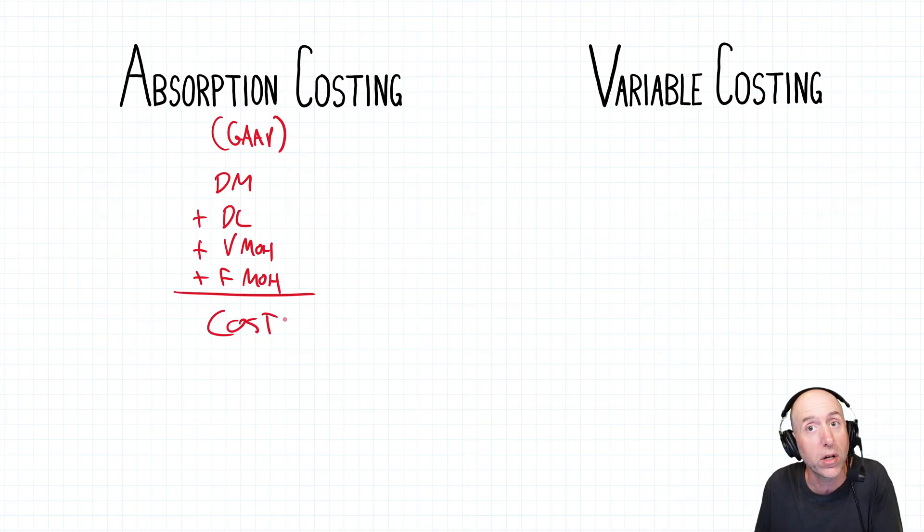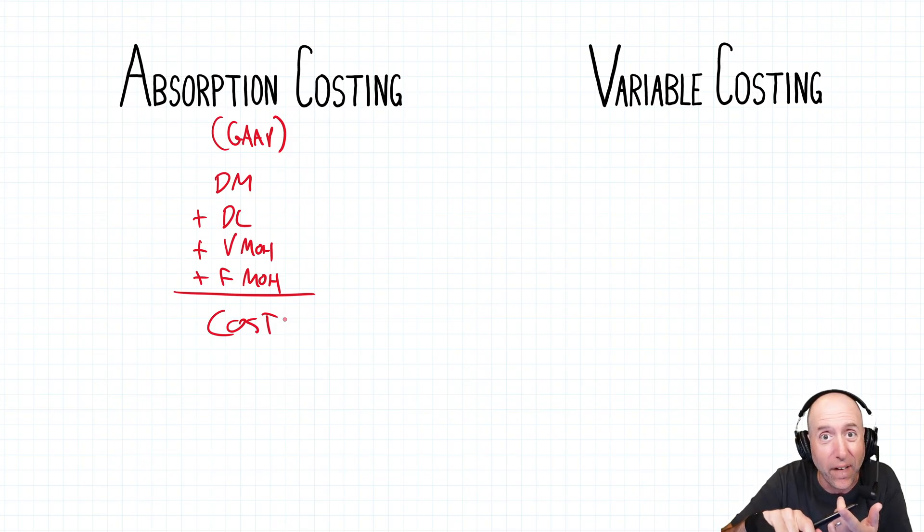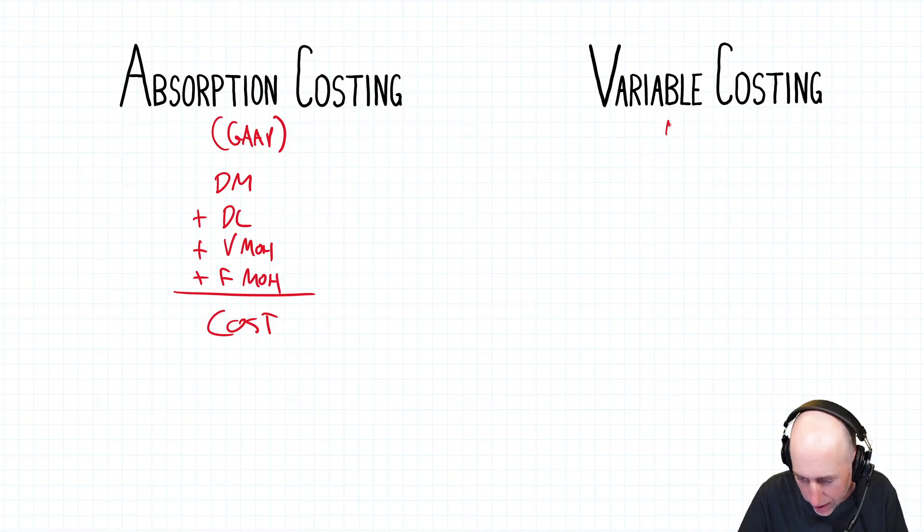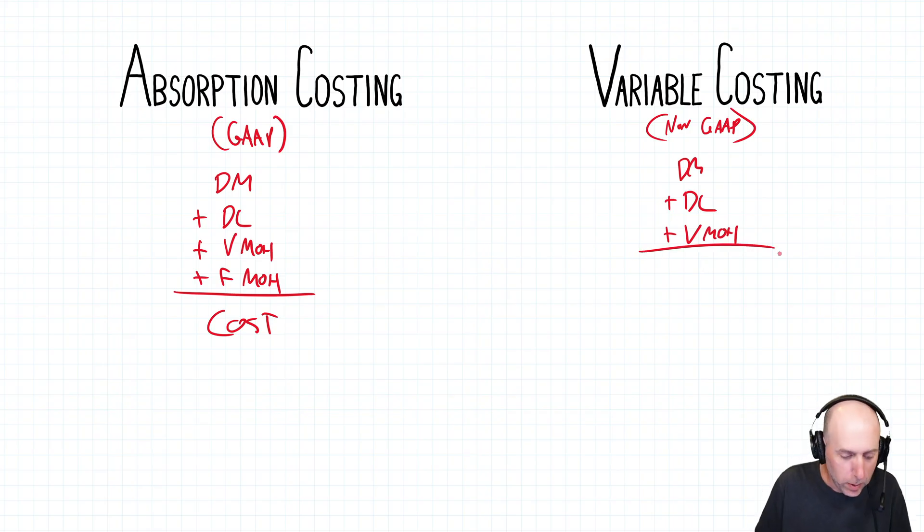Variable costing, which is the number we're going to want to use for like break even analysis, is slightly different. So this is non-GAAP. It's not under the rules of accounting, but it's useful for a manager to make some analysis. The variable costing says just use the variable cost, which is material,